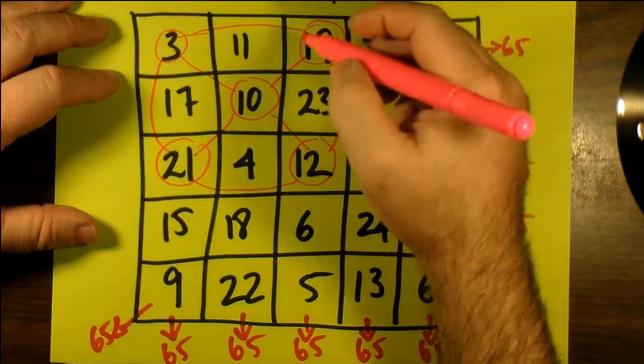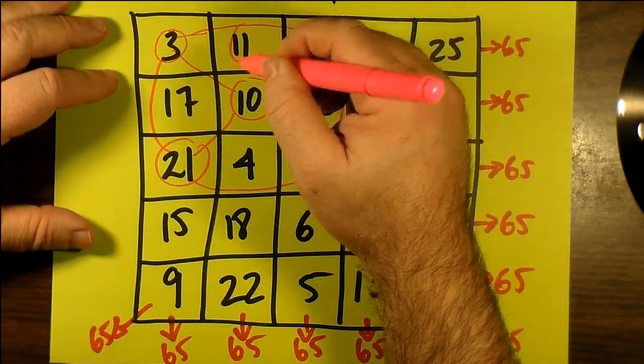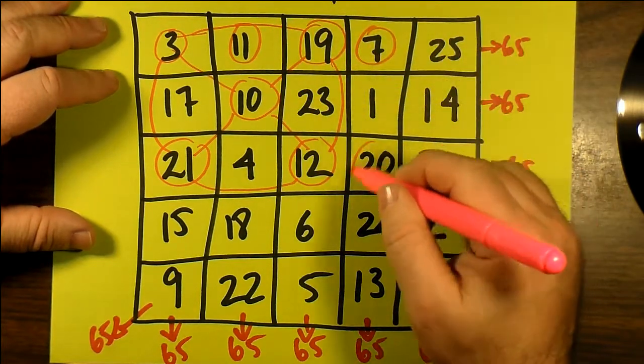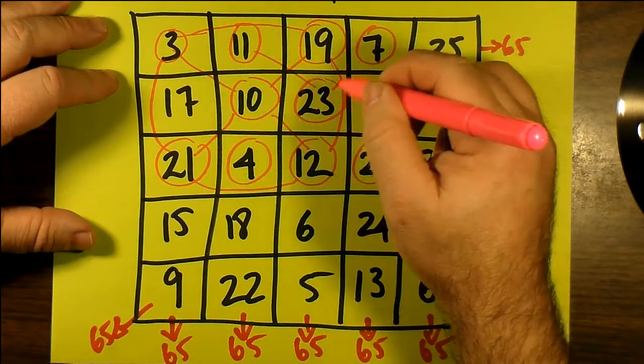This is true for all possible 3x3 sub-squares that you can imagine go into this. And you can see here it just works if we just shift one over.